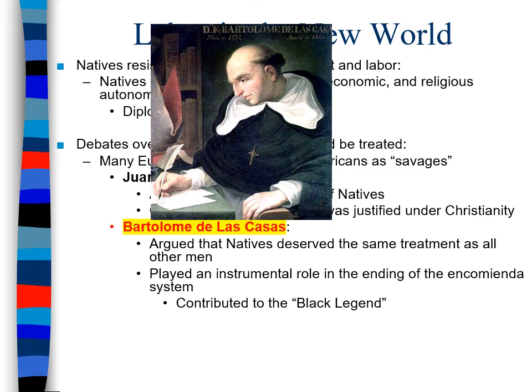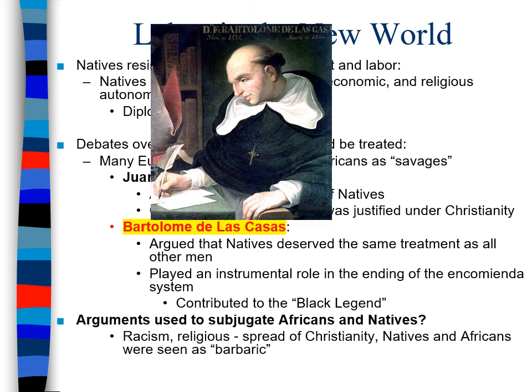However, ending the encomienda system moved from the enslavement of Natives to the subjugation of Africans as slaves — the so-called 'black legend.' There were many different arguments used throughout periods one through four — all throughout American history — to justify the unethical treatment of any non-European, whether African or Native: ideas based on racial superiority, religious superiority, the desire to spread Christianity, and viewing entire groups of people as barbaric savages. Natives did resist — they tried to preserve their political, economic, and religious autonomy — and there were fights breaking out between Europeans and Natives for conquest of land. Juan de Sepúlveda saw non-Europeans as savages and advocated for harsh treatment, justified under Christianity — ideas later used in the antebellum period to justify Southern slavery.